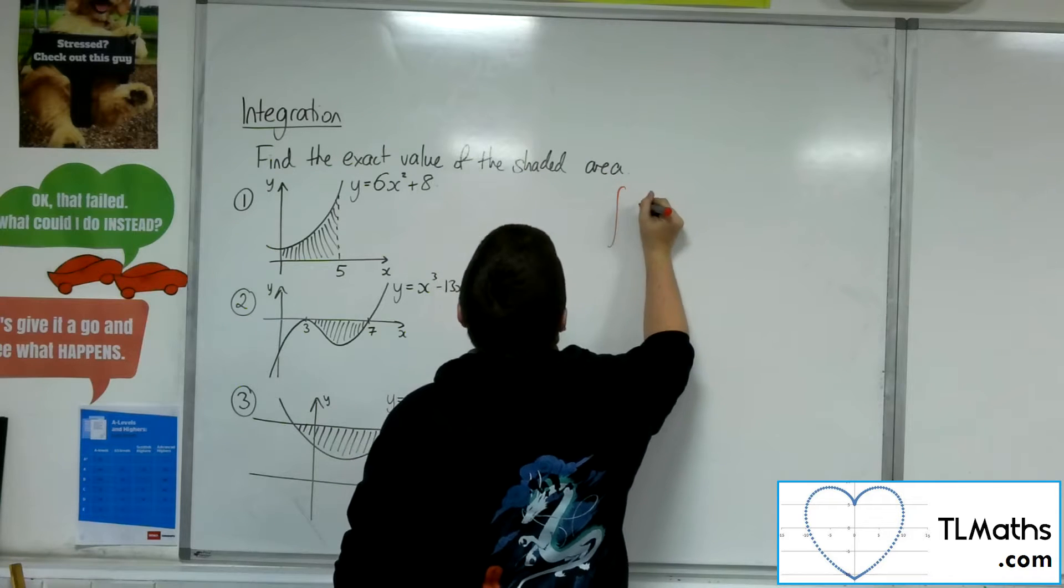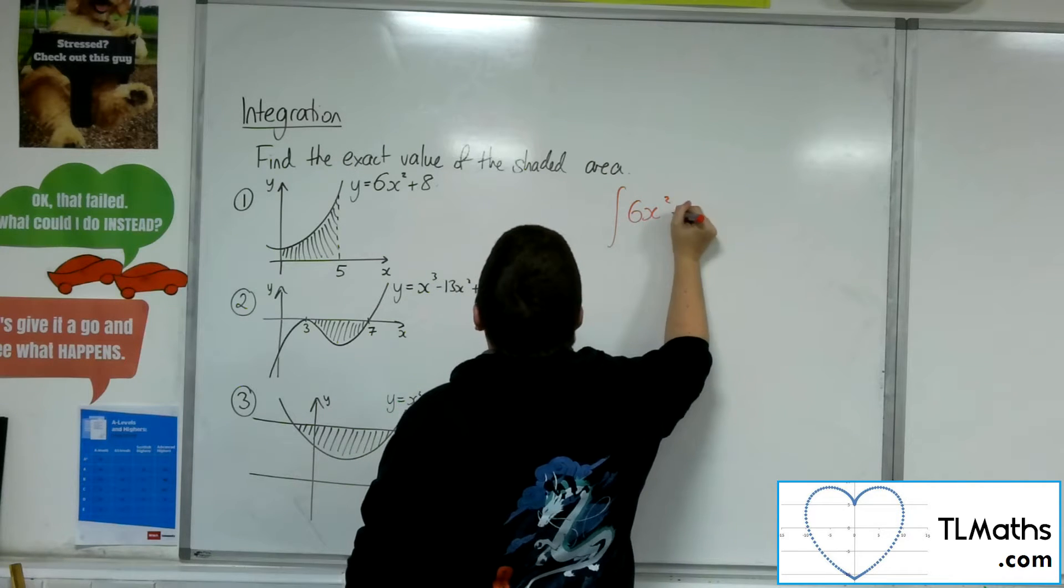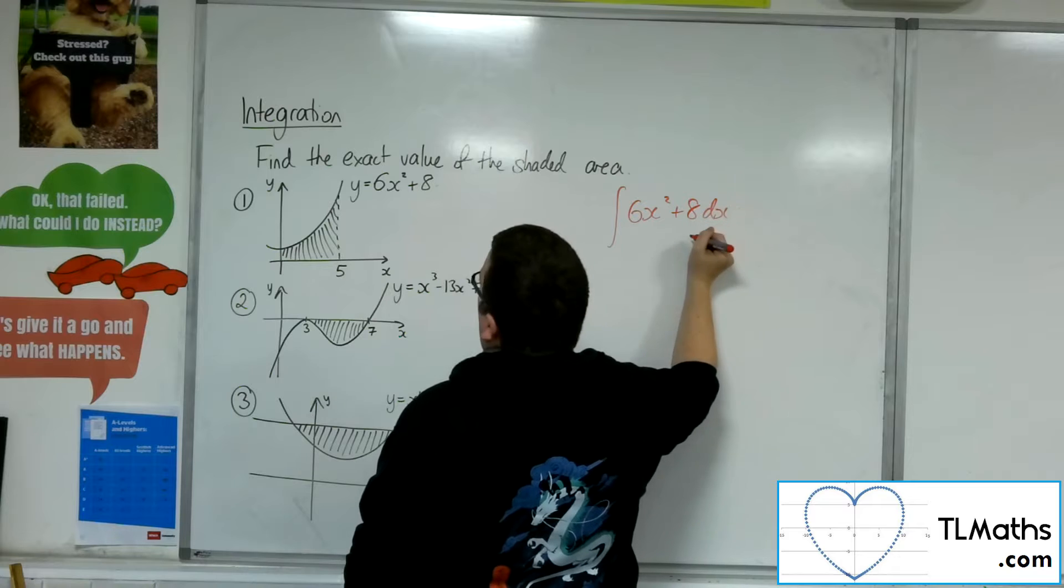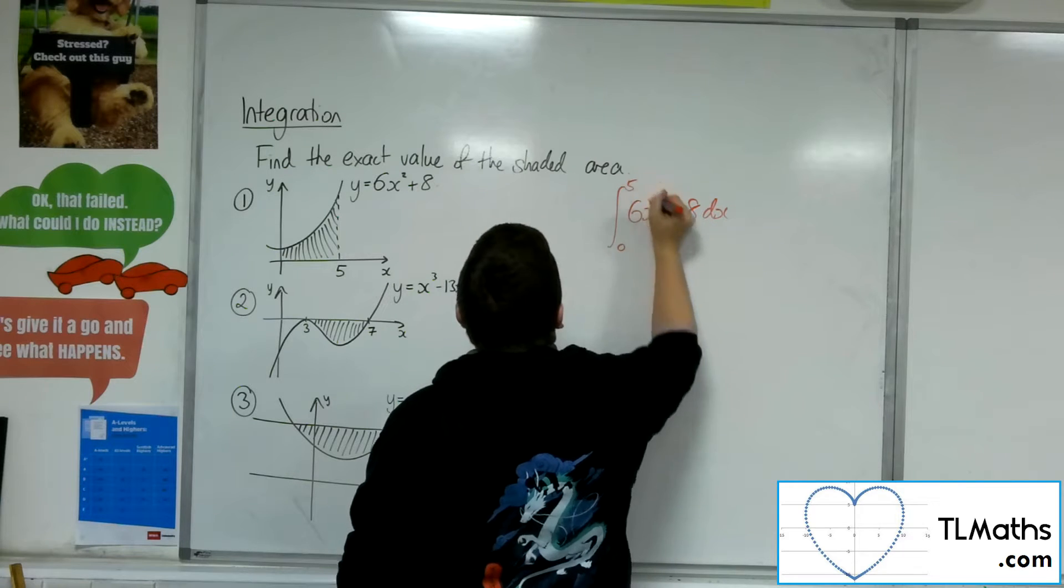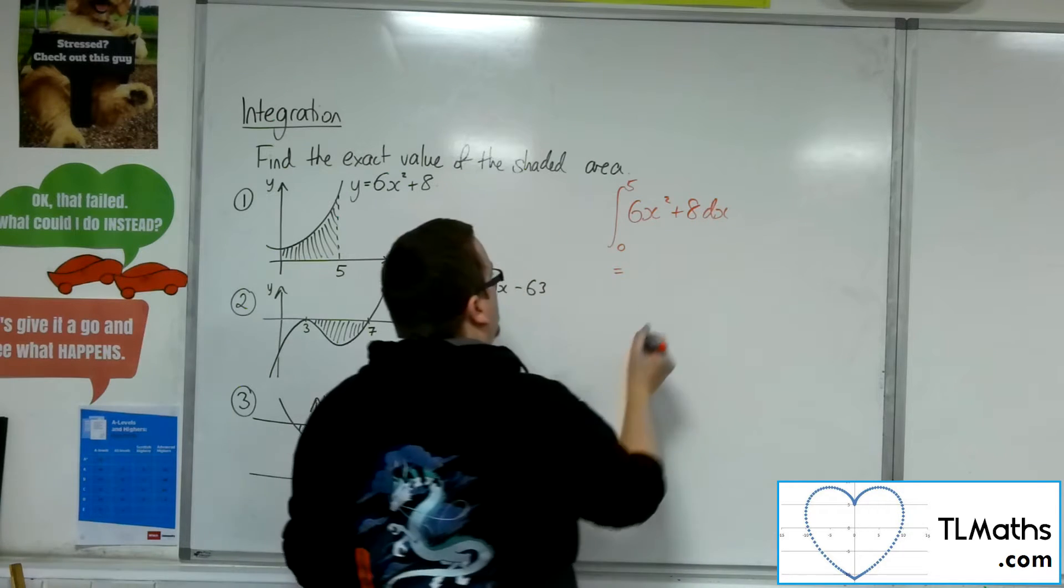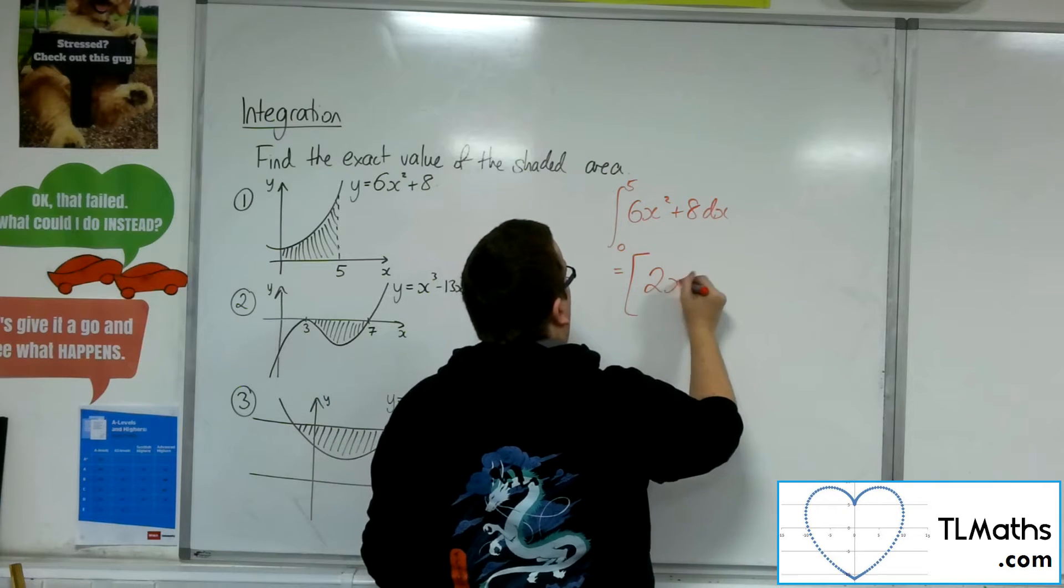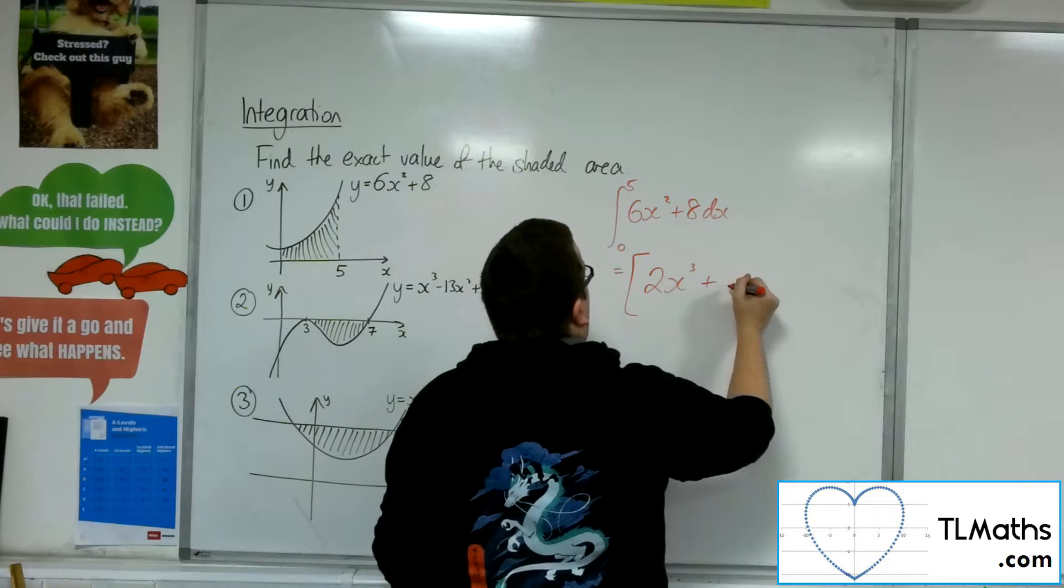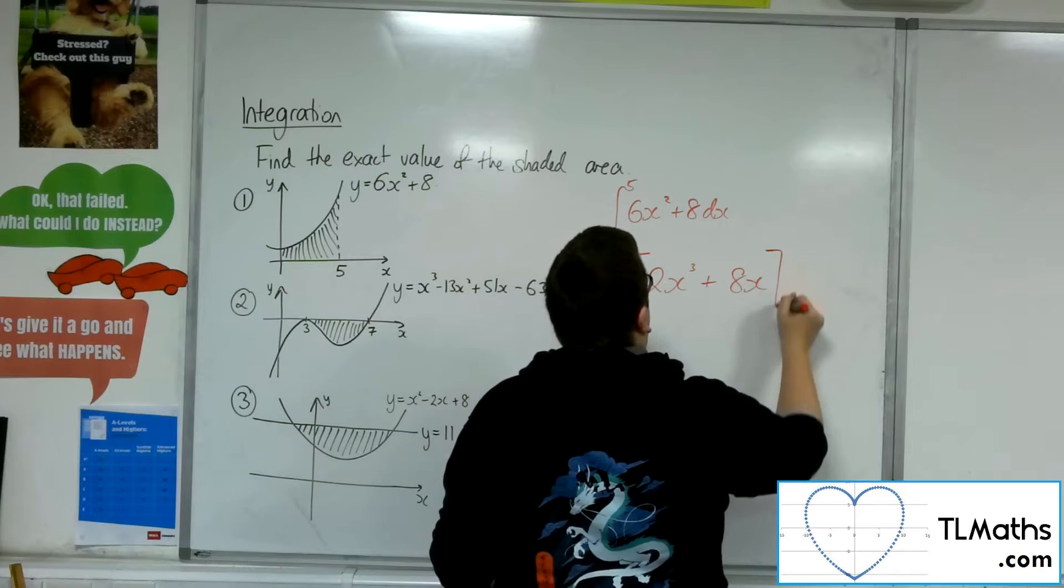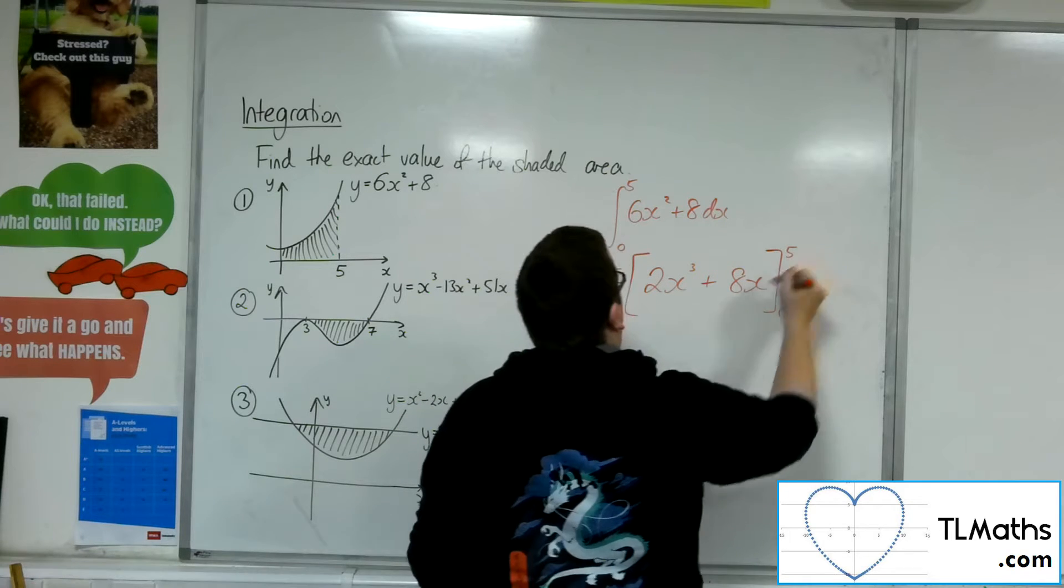So, the integral of 6x squared plus 8, evaluated between 0 and 5. We're going to add 1 to the power, divide by the new power. So, 2x cubed, and then we're going to have 8x, evaluated between 0 and 5.